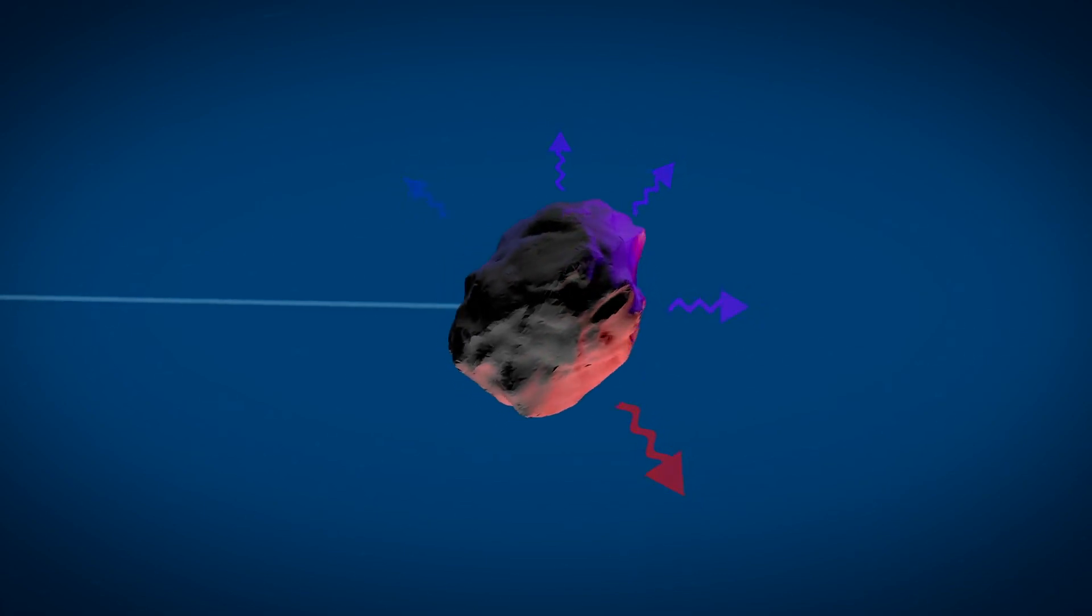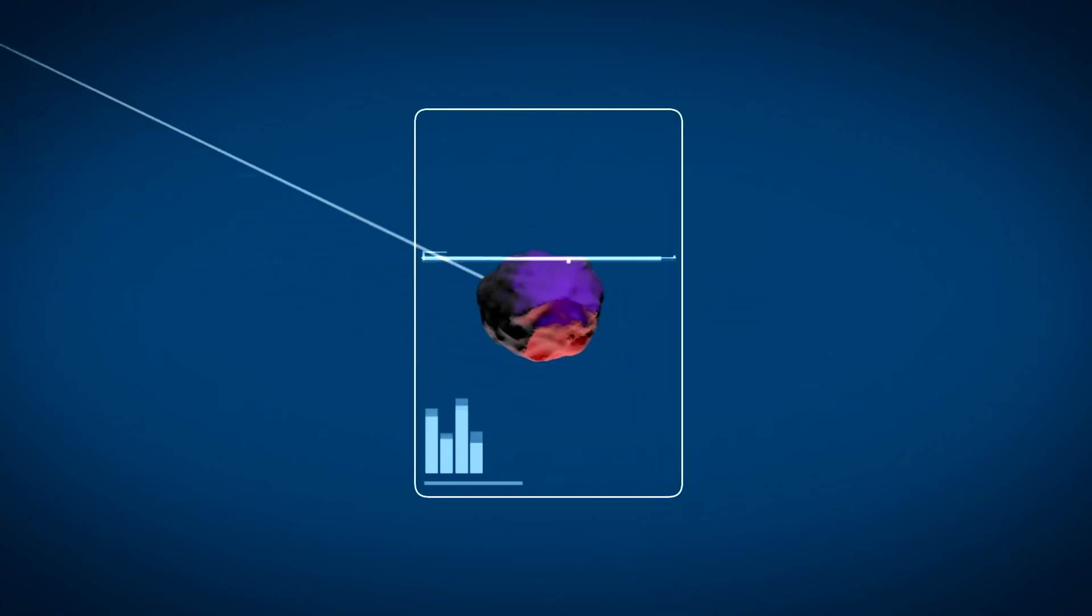Other factors, such as composition, asteroid shape, and surface features, can modify the magnitude and direction of the Yarkovsky thrust.